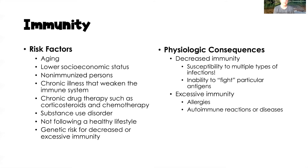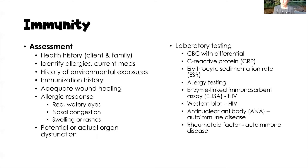Physiologic consequences: for decreased immunity, infection is the primary concern — when your immune system is suppressed, you are at high risk for infection and unable to fight off particular antigens. Excessive immunity is what we see in people with heightened allergic responses, where exposure to an allergen can trigger a severe allergic reaction or even anaphylactic shock. We can also develop autoimmune reactions or autoimmune diseases when immunity is heightened or excessive.